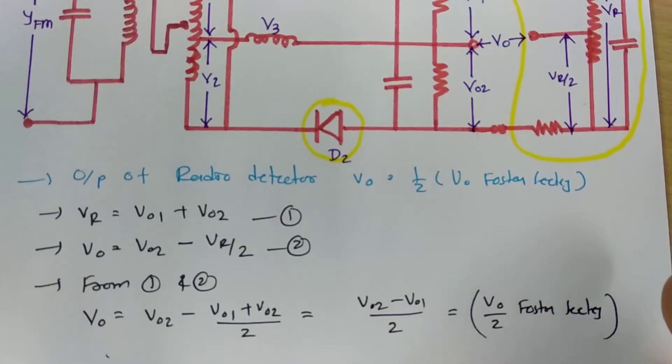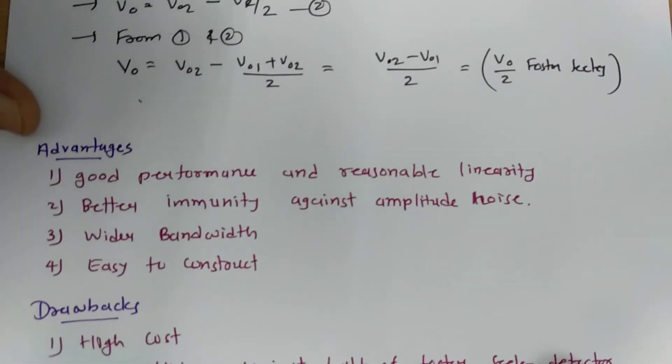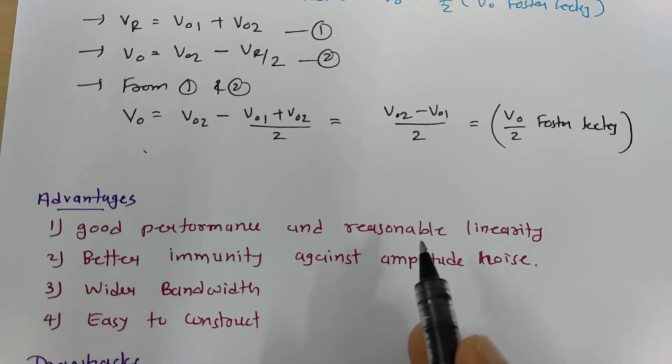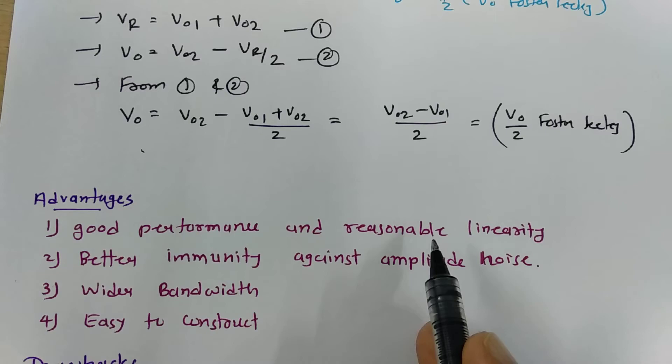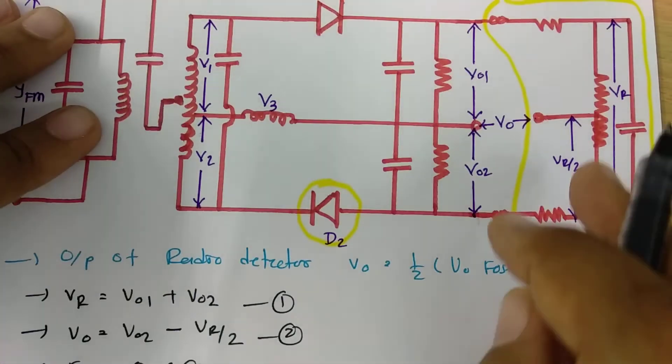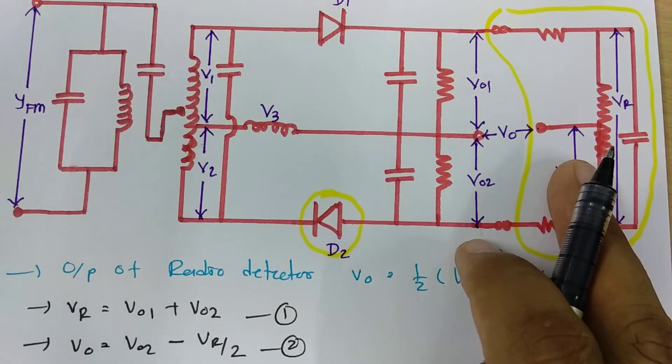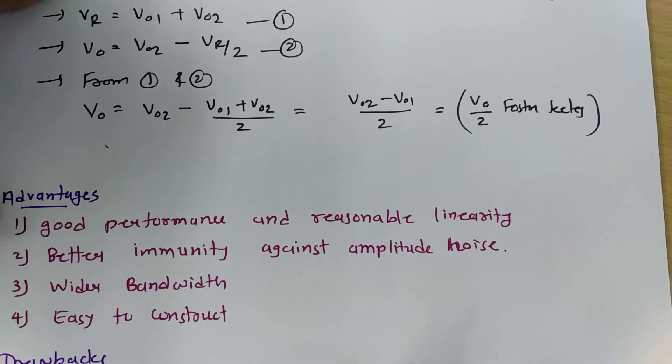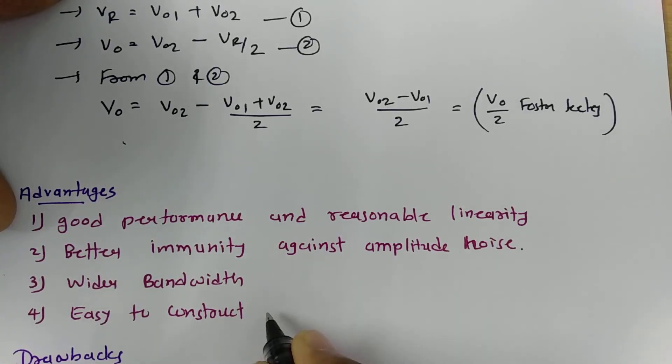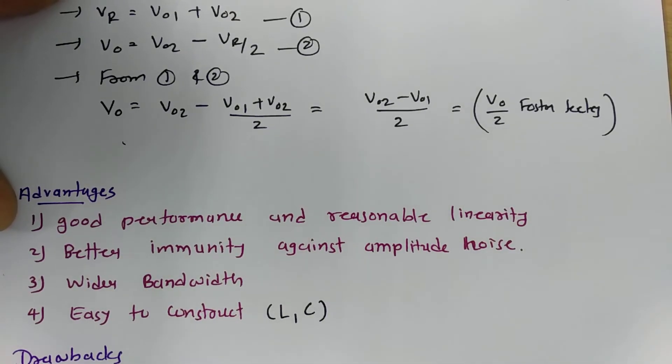Now let us move on to advantages and disadvantages. When we talk about advantages, it offers good performance and reasonable linearity. Second is it provides you better immunity against amplitude noise because of the circuit which we are connecting. So that is acting like bandpass limiter which gives you better noise immunity. It has wider bandwidth and it is easy to construct by using discrete components like L and C.